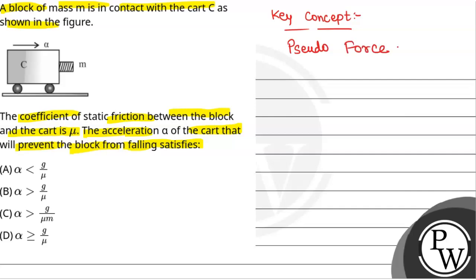Now, since the cart is moving, the block will experience a pseudo-force. That will be equal to m into alpha — this will be the pseudo-force experienced by the block. The pseudo-acceleration will be in the opposite direction to the acceleration of the cart.